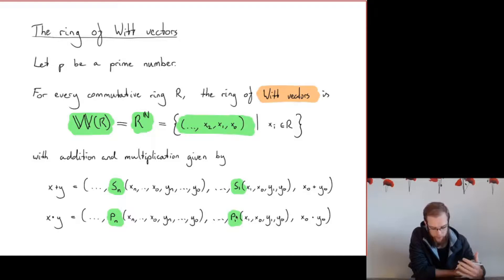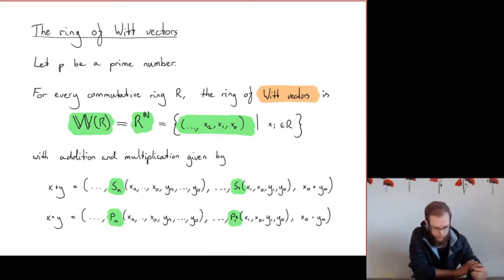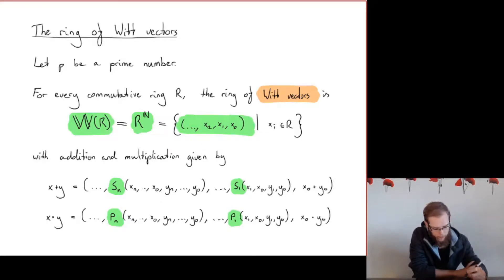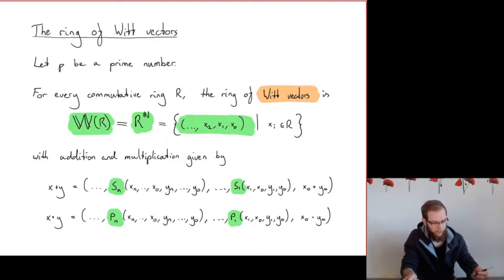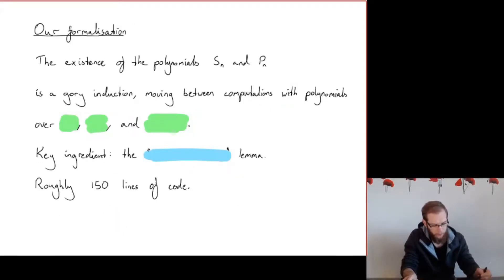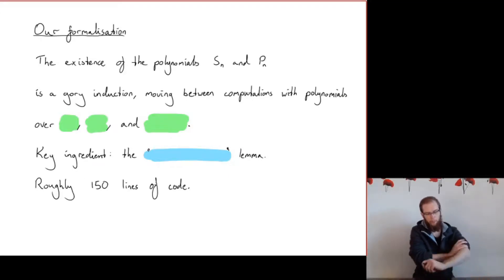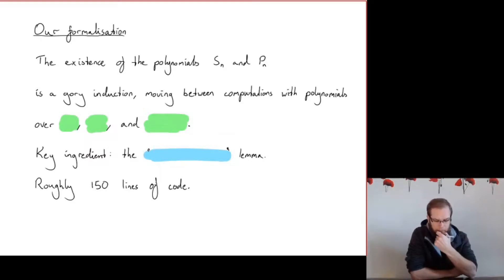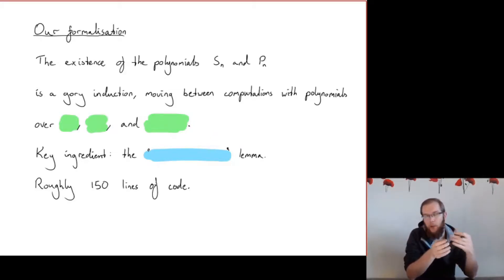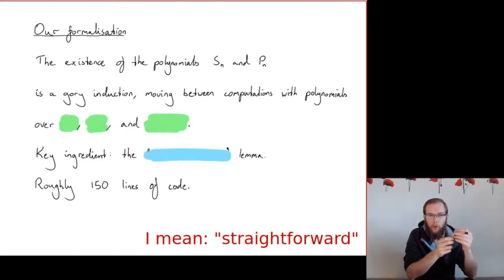Of course making these polynomials really explicit is something you don't want to do by hand — computers can do that. The nice thing is that we can now try to prove things about this structure. One of the most fundamental things is to check that this addition and multiplication actually form a ring structure — we need to check the ring axioms. The polynomials Sₙ and Pₙ are not very constructive; for S₁ we extracted this polynomial out of an expression where everything was multiplied by p.